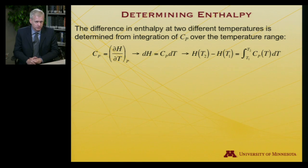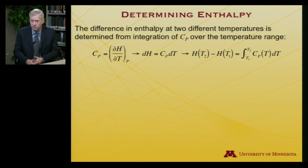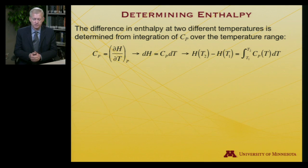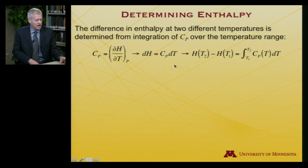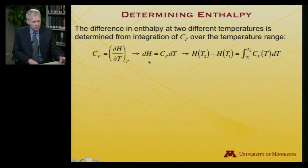The reason this is interesting is that the heat capacity at constant pressure allows us to potentially determine enthalpy experimentally — more accurately, enthalpy changes. The difference in enthalpy at two different temperatures is determined by integrating C_P over the temperature range. Taking C_P = ∂H/∂T, I rewrite this as dH = C_P dT. So H(T2) − H(T1) equals the integral from T1 to T2 of C_P dT.